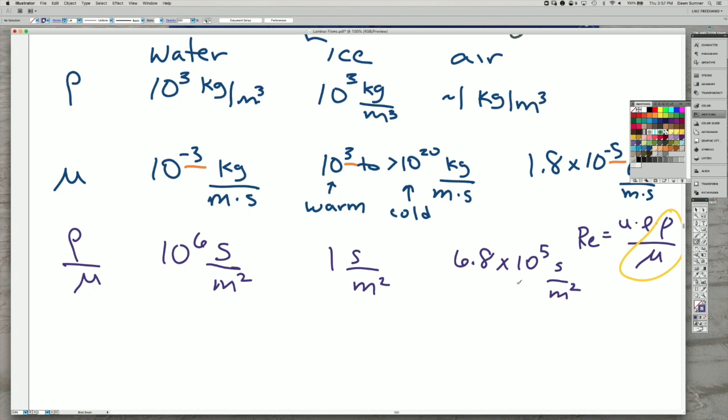So if we look at, if we compare these numbers, go back to the yellow here, what we see is this, for ice, it's very low. And because that multiplier is low, the Reynolds number is usually less than 500.